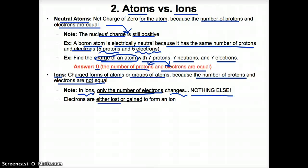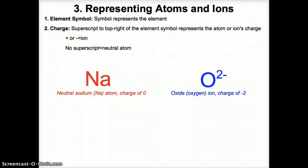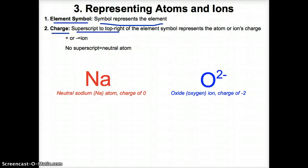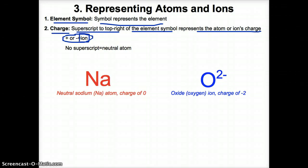Electrons are either lost or gained to form an ion. For every atom or ion, you'll always have an element symbol first, followed by a charge as a superscript to the top right of the element symbol. If the charge is positive or negative, that tells you that you have an ion. If there is no superscript, then you have a neutral atom — the charge is zero. For example, Na with no superscript is a neutral sodium atom.